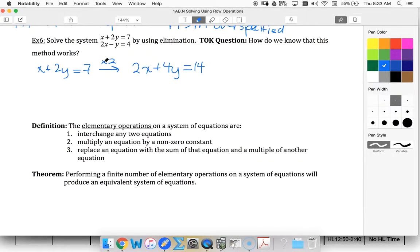And we're going to talk about that in class. I'm going to take my second equation and multiply it by negative 1. So negative 2x plus y equals negative 4.